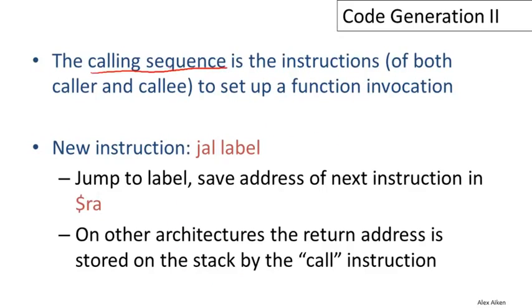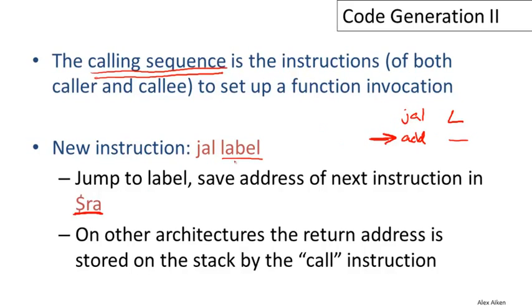The calling sequence is the sequence of instructions of both the caller and the callee to set up a function invocation. We'll need a new instruction for function calls: the jump-and-link instruction. Jump-and-link jumps to the label given as an argument and saves the address of the next instruction after the jump-and-link into the register RA, which stands for return address. So it jumps to label L, stores the address of the following instruction in RA, and the code at L can then jump back to RA to return to the caller.